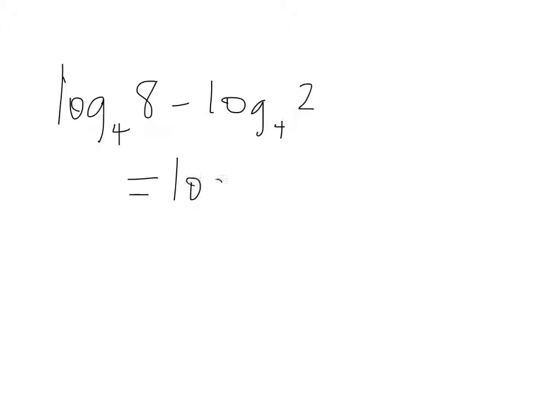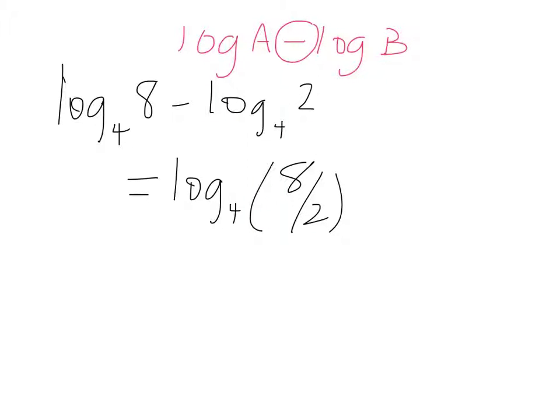So let's kind of mix it up and make it a little bit harder. What if I have log base 4 of 8 minus log base 4 of 2? This would end up being log base 4 of 8 divided by 2. Because the rule where if I have two logarithms and I want to combine them, and they were separated by subtraction, I combine them with division. That is the rule.